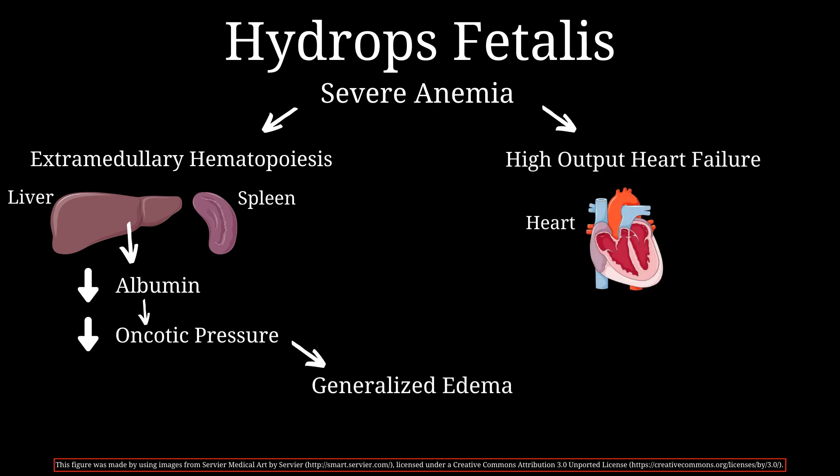Due to severe anemia, tissues in the body are not receiving enough oxygen to function normally. To compensate, the heart tries to pump out more and more blood each time, thinking it will meet the tissue's oxygen demand, but it cannot keep up and eventually fails because there are fewer red cells in the circulation to transport oxygen. We call this condition high output heart failure, which in turn can increase central venous pressure.